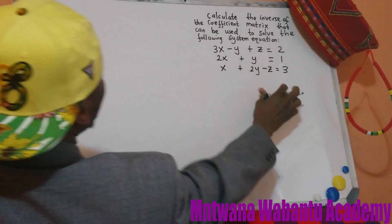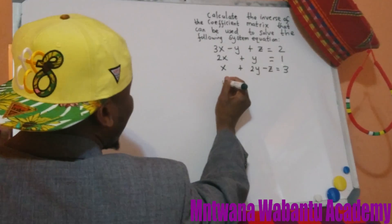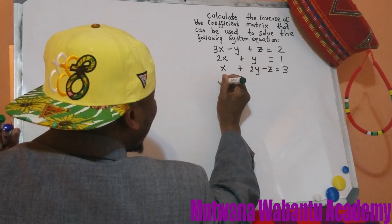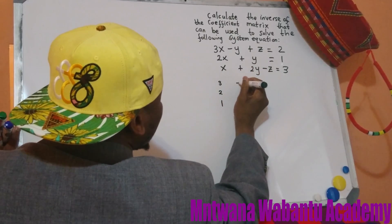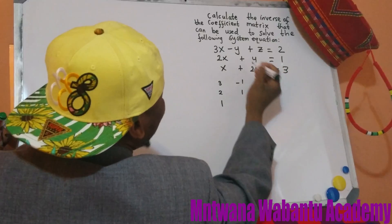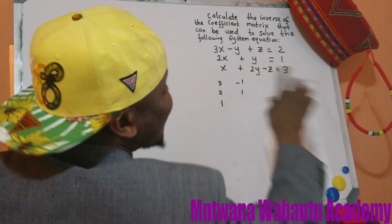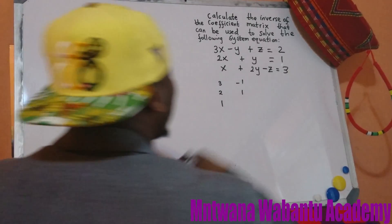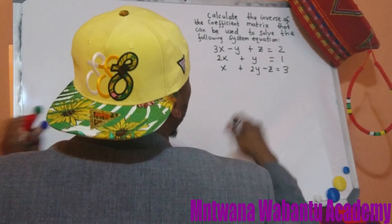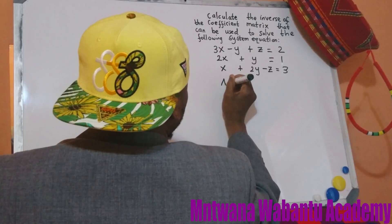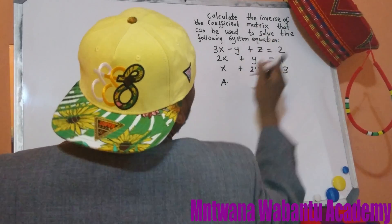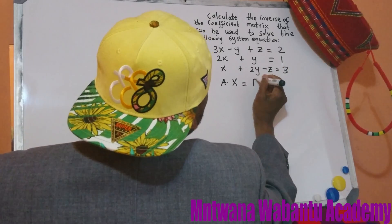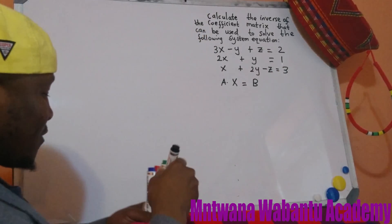So what I'm going to do, first and foremost, I'm going to write this as a matrix. I'm going to write only the numbers and leave the letters out. In another way, I'm going to say I'll call the coefficient matrix A, and this part with all the letters I'll call X, and this part here I'll call B.